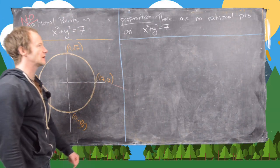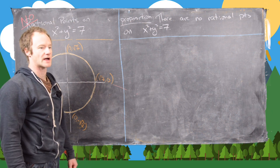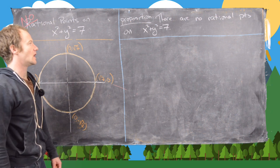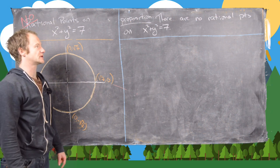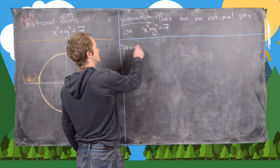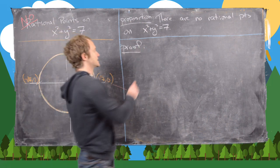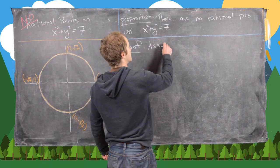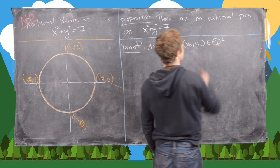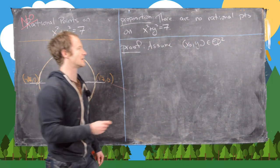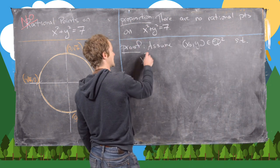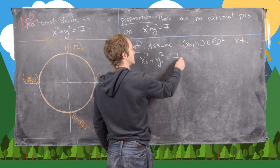As a companion to our previous video where we described all rational points on the unit circle, in this video we want to show that there are no rational points on the circle x squared plus y squared equals 7. We'll do that by contradiction. We assume that (x₀, y₀) is in ℚ² — in other words, both are rational numbers — such that x₀ squared plus y₀ squared equals 7.